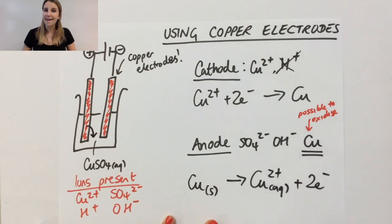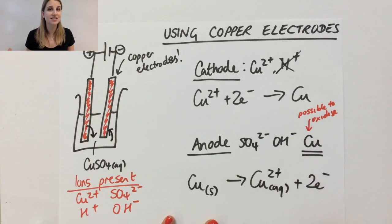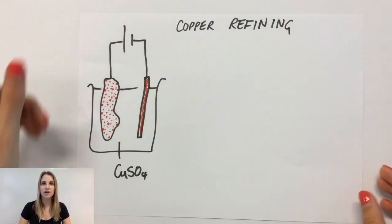You may be thinking, what's the point in this? You're just moving the copper from one place to the other. Let's have a look at it in the example of copper refining. This is how we purify copper.